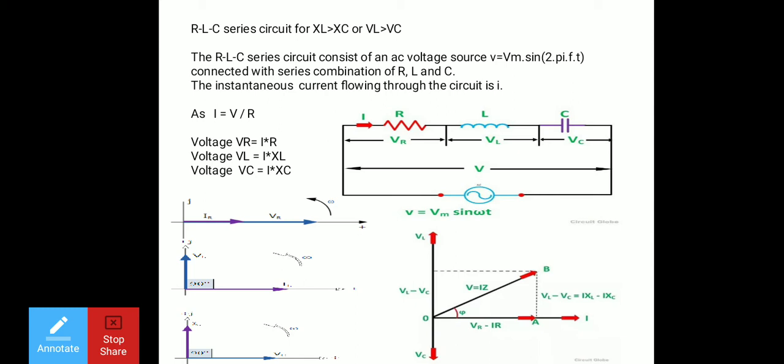In the last two lectures we studied the RL series circuit and RC series circuit. Now we are going to see the RLC series circuit for the given condition where XL is greater than XC. The supply voltage source is V = Vm·sin(ωt), or equivalently V = Vm·sin(2πft).